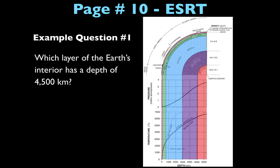Now I want to walk you through some example questions so you can see the type of questions you'll be asked about this diagram. The layers remain color-coded to help visualize the process. Our first question is: which layer of Earth's interior has a depth of 4,500 kilometers? Your first step is to locate 4,500 kilometers on the x-axis, then bring that up to the top part of the chart to see which layer that depth belongs to — you'll find that 4,500 kilometers puts you in the outer core.